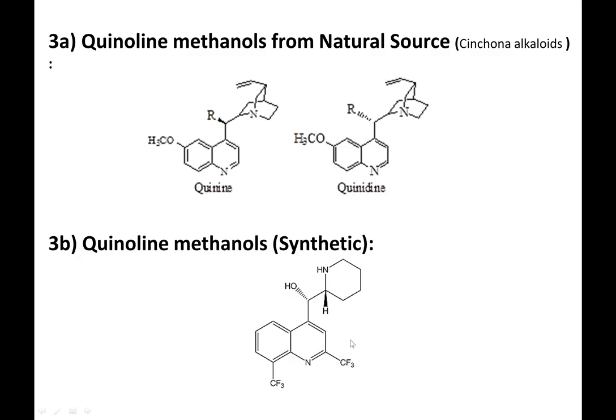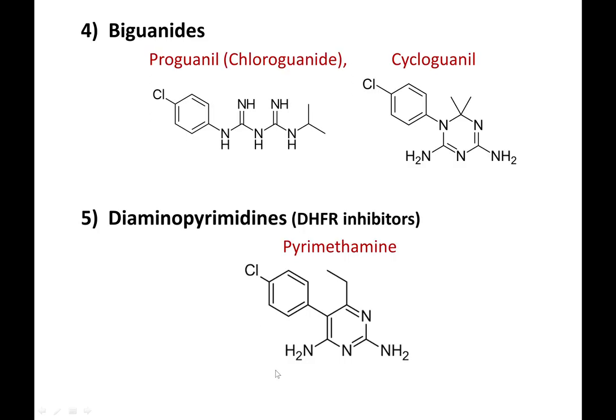The biguanides include proguanil and its cyclized form cycloguanil — proguanil is the prodrug. From the structure of cycloguanil, the structure of pyrimethamine was evolved through drug design during World War II. Hitchings, Rose, Roth and other scientists received the Nobel Prize for the discovery of DHFR inhibitors, particularly the anti-malarials.